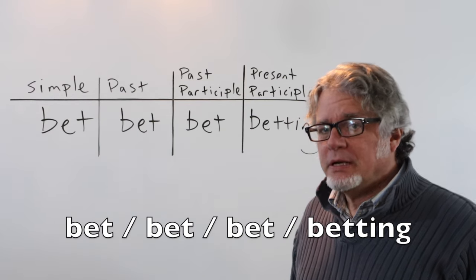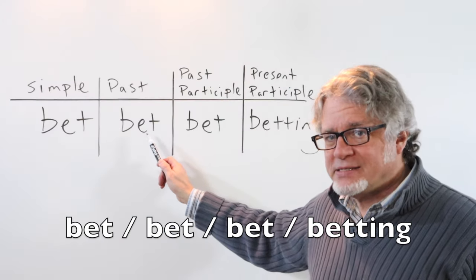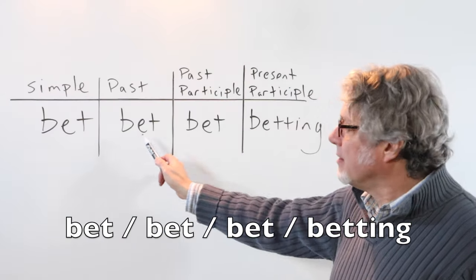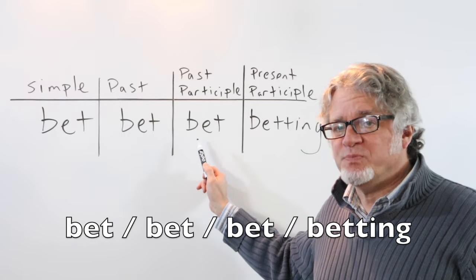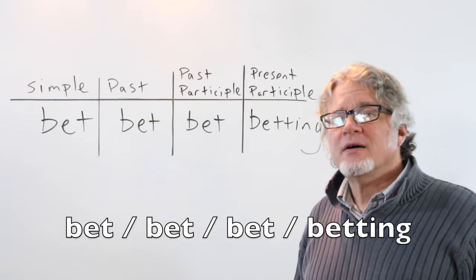When used as a verb, the simple form is bet. The past tense is bet, the past participle is bet, and the present participle is betting.